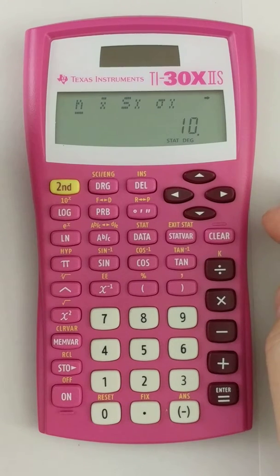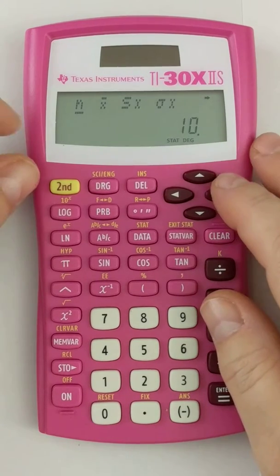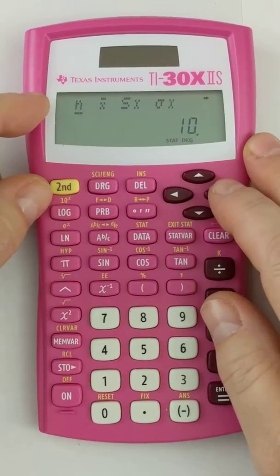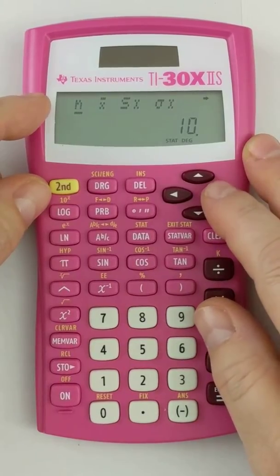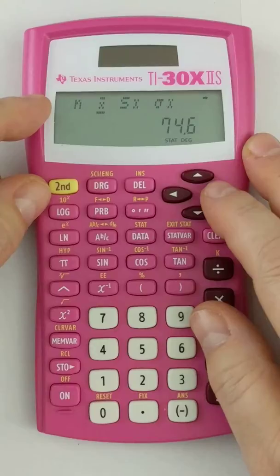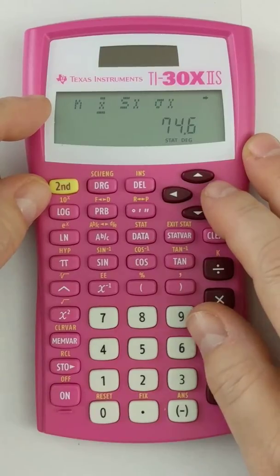And look at what it gives me. All right, n is 10. I can shift through that list at the top here. So n is 10, the mean x bar is 74.6.